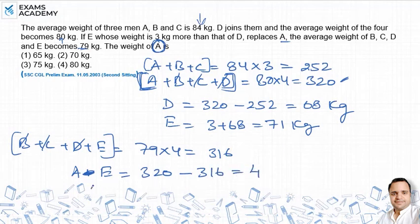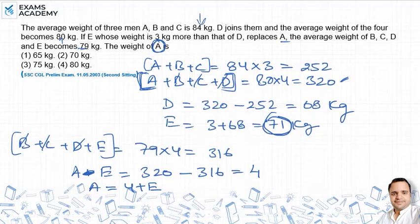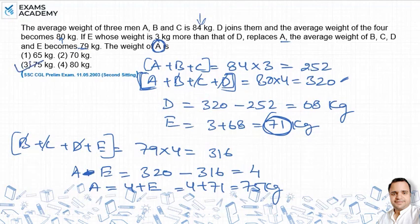तो A बराबर कितना हो जाएगा - 4 plus E. A की जो weight आएगी वो 4 plus E. और E हमने निकाला है question में, वो 71 है. तो 4 plus 71, that is equal to 75 kg. और A का weight निकल के आया है - option 3, 75 kg.